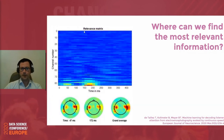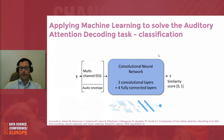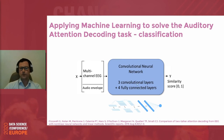This is a relevance matrix. Of all the recorded channels, we see that the most relevant are those in the auditory cortex — which is normal and logical. The other approach we delved into for this task is a classification approach, using machine learning by putting multi-channel EEG amended by audio envelope into a convolutional neural network.